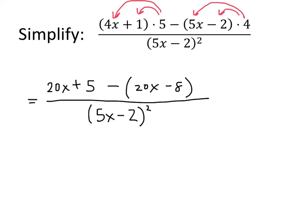What do we have on the top? When we distribute our minus sign, we have 20x plus 5 minus 20x, and then minus minus 8 gives us plus 8.